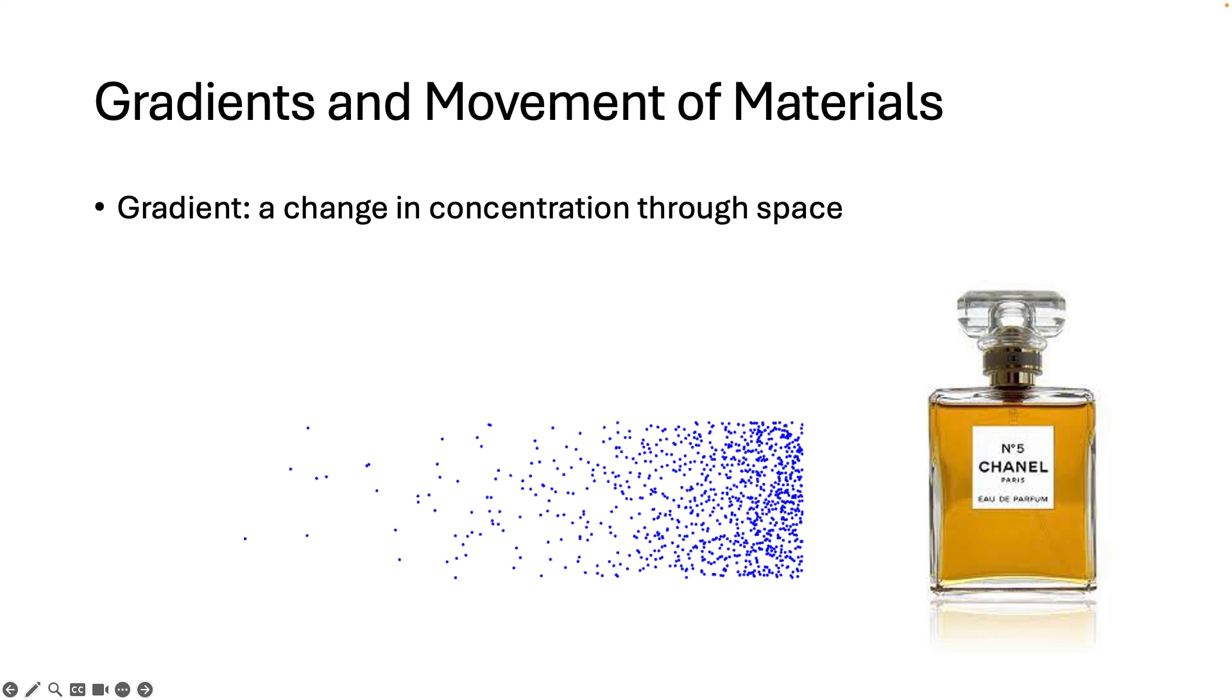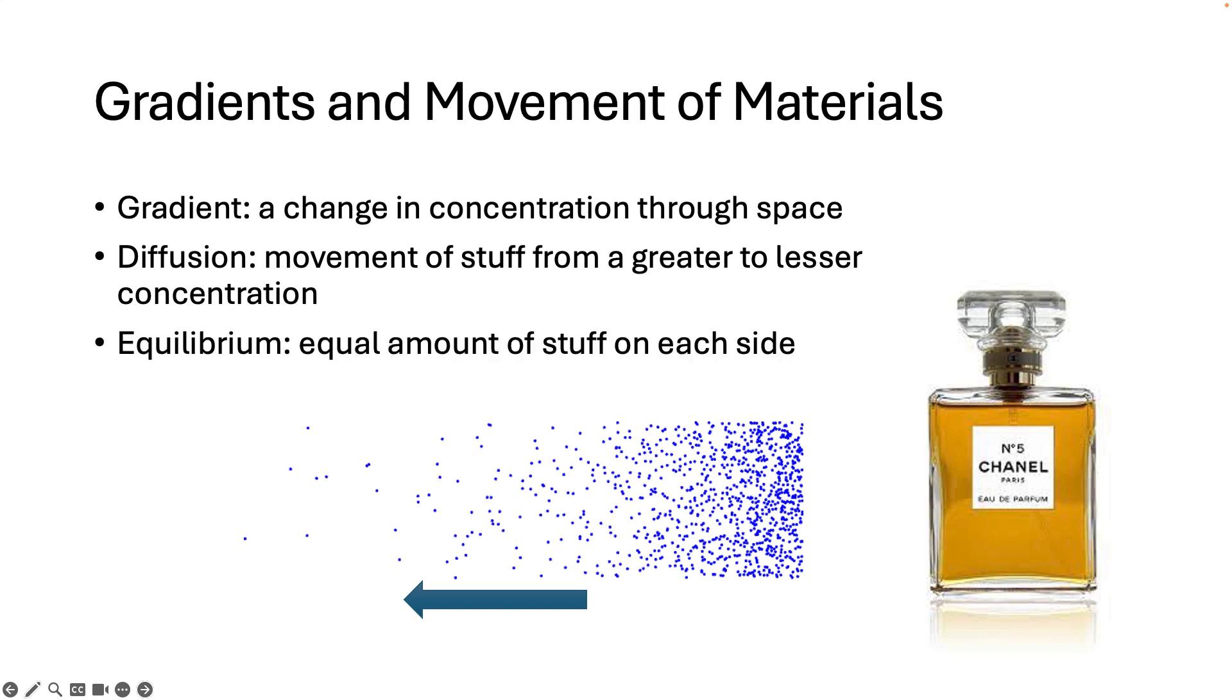Now if you wait a while, the molecules of perfume would start to move away from each other, going towards the area with lower concentrations. We call that diffusion, the movement of molecules from a greater to a lesser concentration. Eventually, the molecules would spread out until there was no gradient at all, and we call that equilibrium.